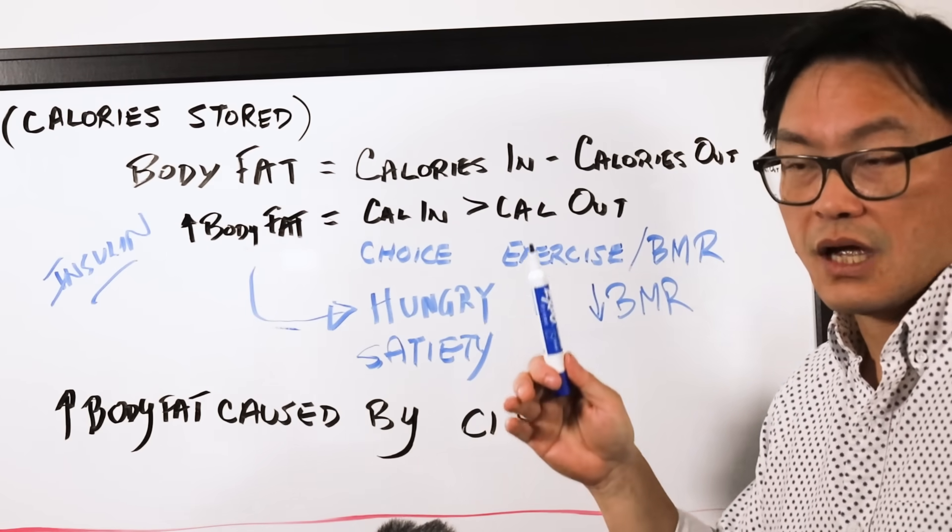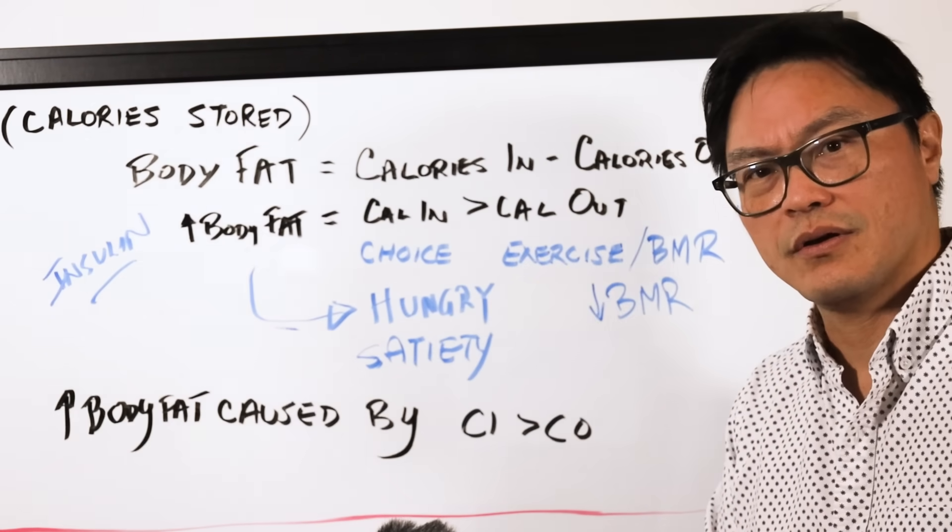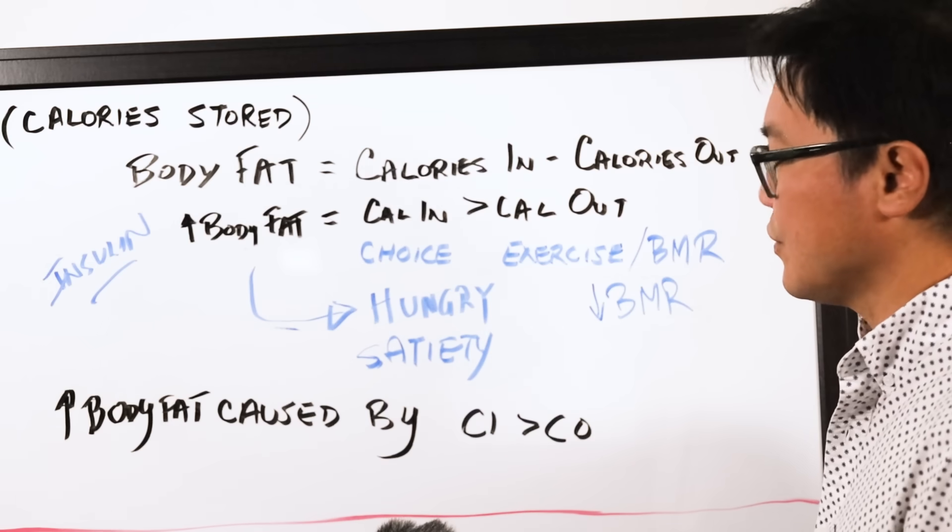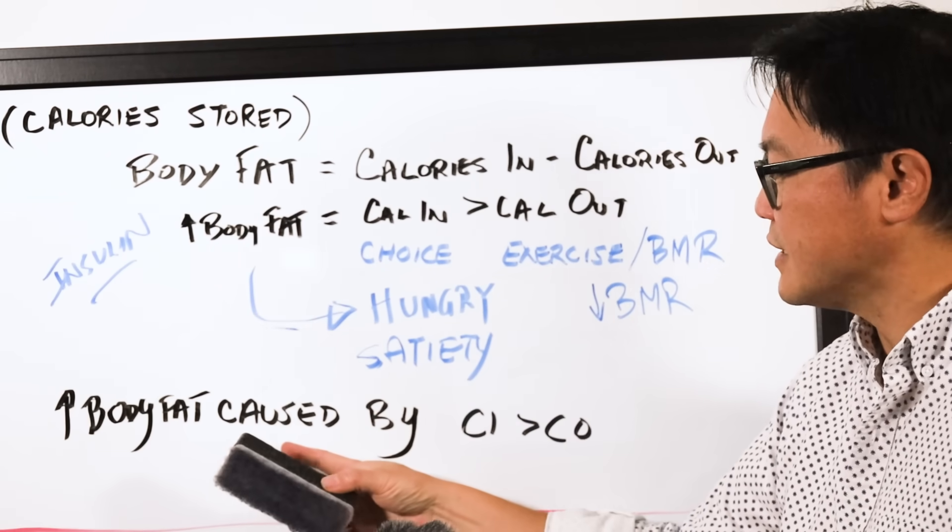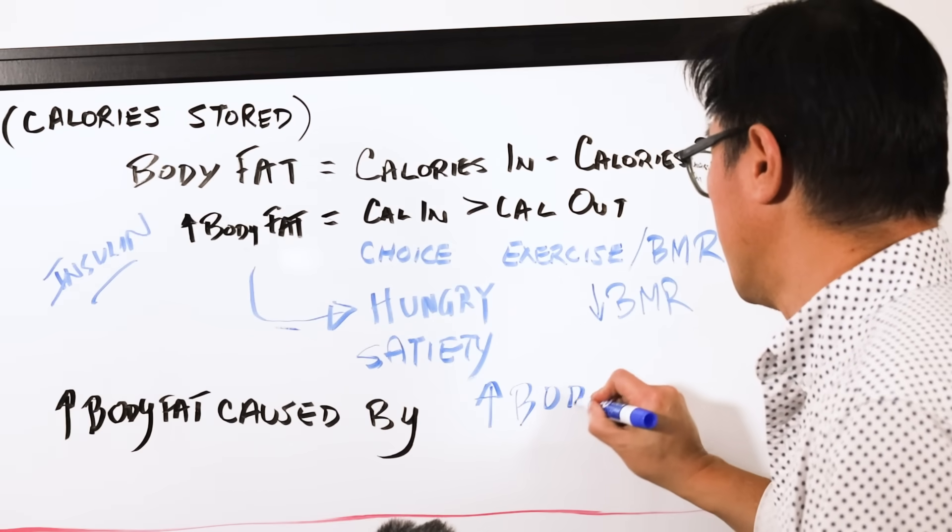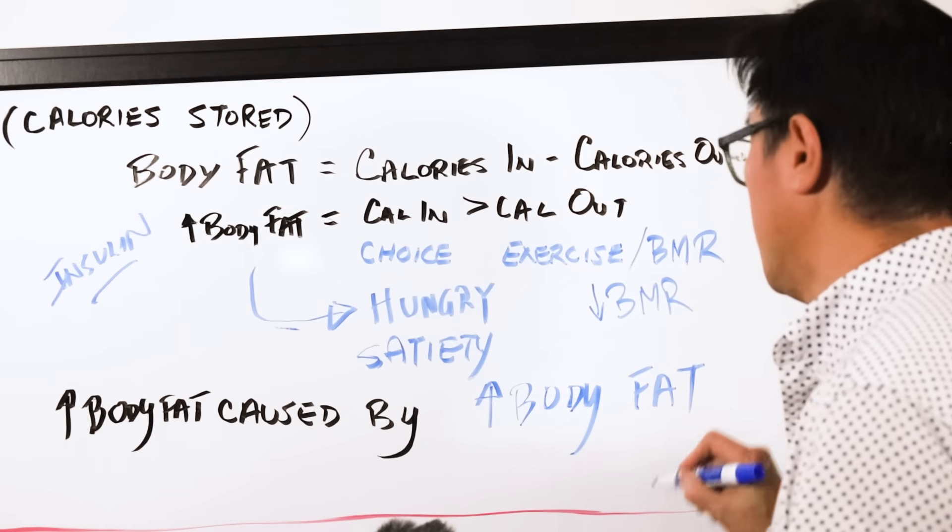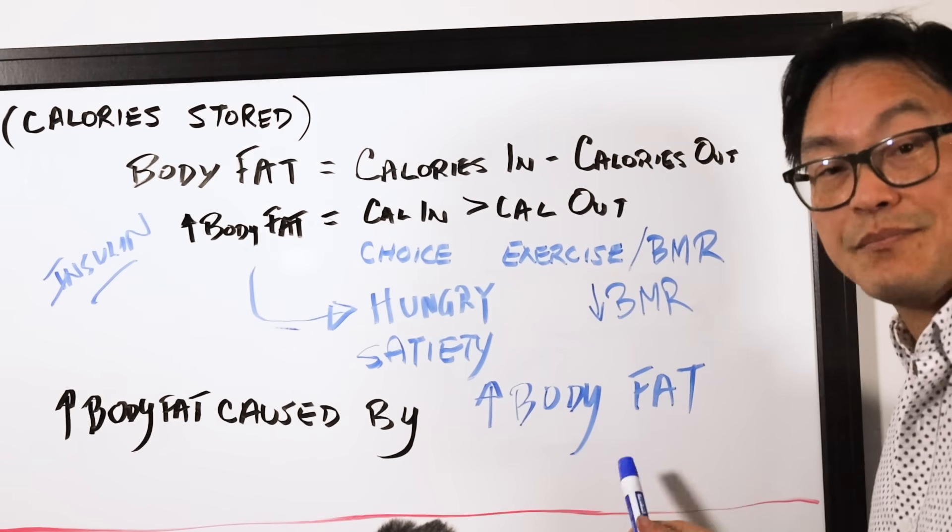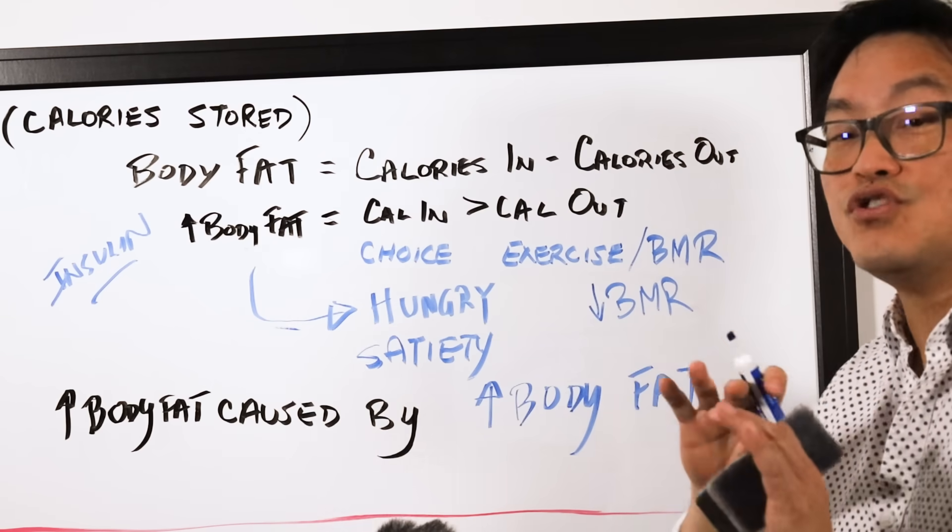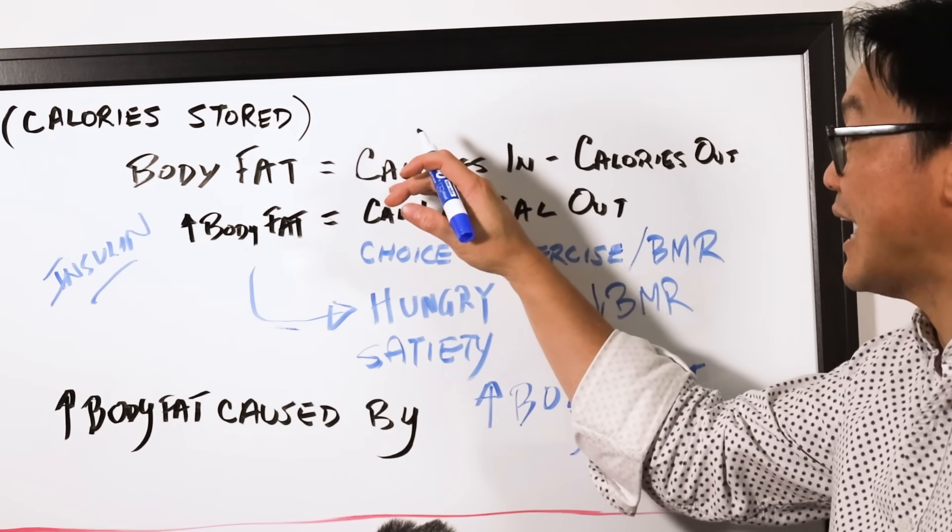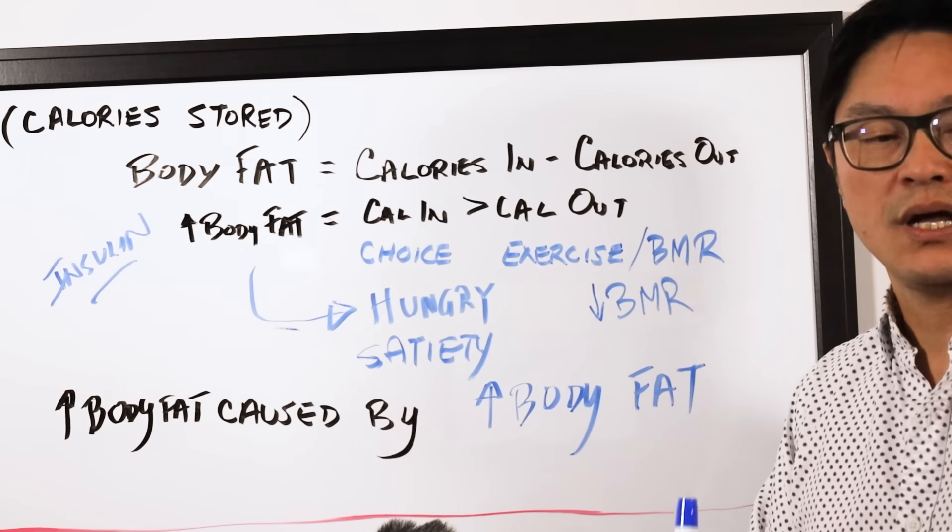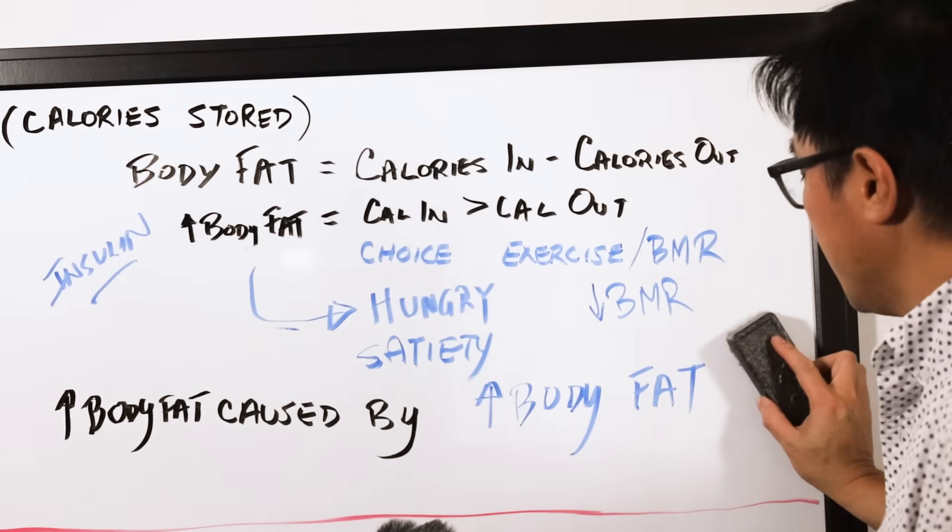So let's replace this term, calories in greater than calories out, with this term. Increased body fat is caused by increased body fat. I haven't said anything about what actually causes it. The same thing that causes it is the thing itself. It gives you no insight into what actually causes the calories in to be greater than the calories out. It's only describing what the process is.